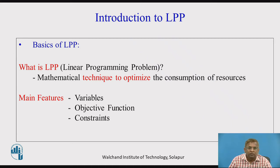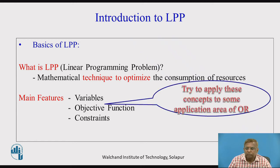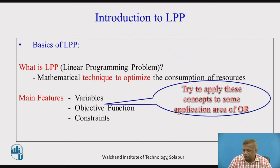These are the three main features: the different variables of the problem, the objective function that is something to be achieved, and constraints that are the limitations of the problem. I would expect you all to try to apply these concepts to some application area, some domain you can think of — some industry, organization, service industry — and how you can think of applying LPP in those situations. An applied mind is very important for these types of techniques to be really implemented.